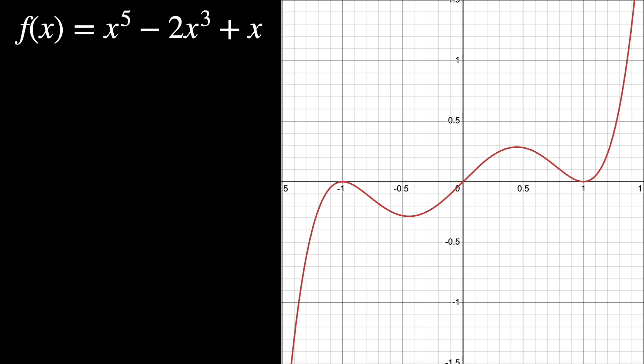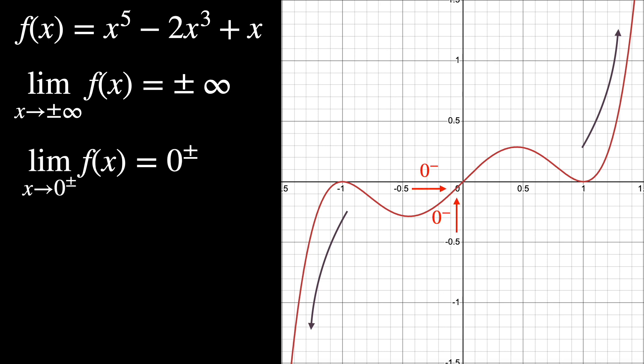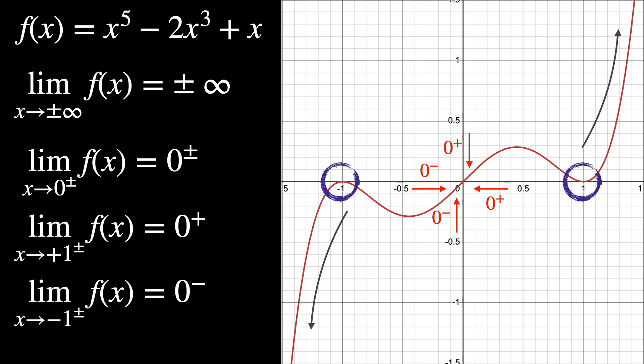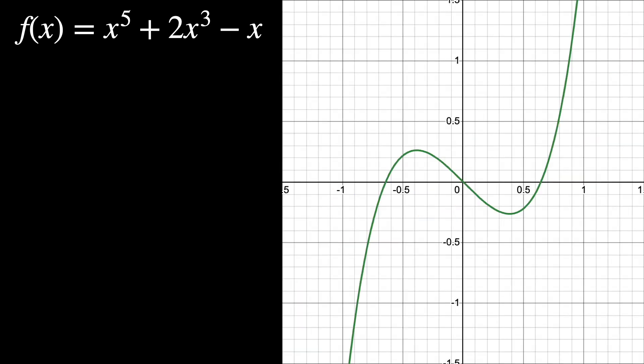Another thing to do in order to draw this graph is to calculate the limits. So the limit when x goes to plus or minus infinity, for example, it goes to plus and minus infinity. When it goes to 0 from the left and from the right, respectively, we're going to get 0 anyway. And the limit for x that goes to 1 from the right and from the left, we get 0, and same thing for minus 1. So after doing all of this, we can have a pretty good idea of how this function is going to look like.